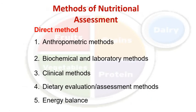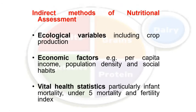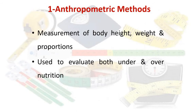We will discuss direct methods in detail but not indirect methods. The first is the anthropometric method, which is the most commonly used method in clinics as well as in social science research. In this method, we measure body height, weight, and proportions. It is used to evaluate both under- and over-nutrition, which is why it is the most important, most common, and most cost-effective method.